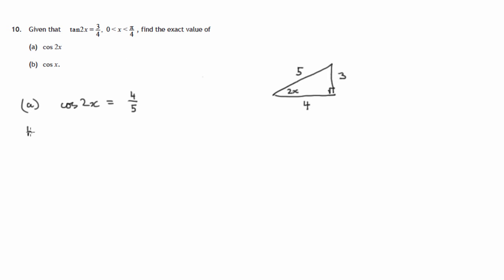Part B: finding cos x. There is a double angle formula that says cos 2x is the same as 2 cos² x — cos x times cos x — minus 1. Using that double angle formula, we can get cos² x on its own.